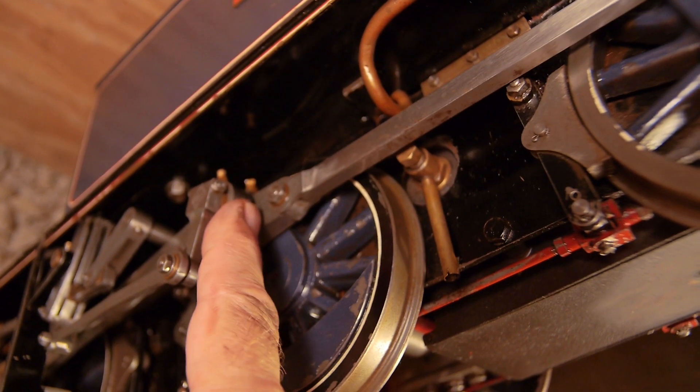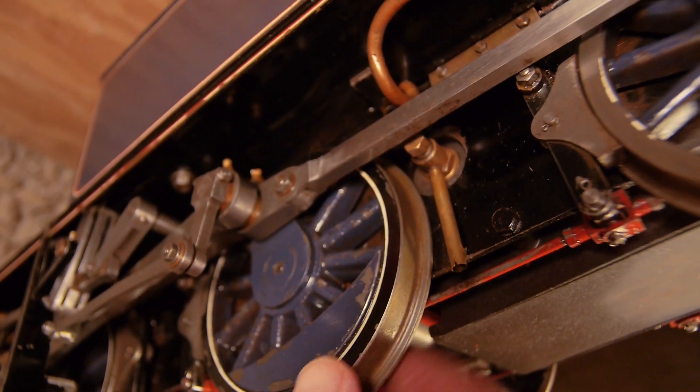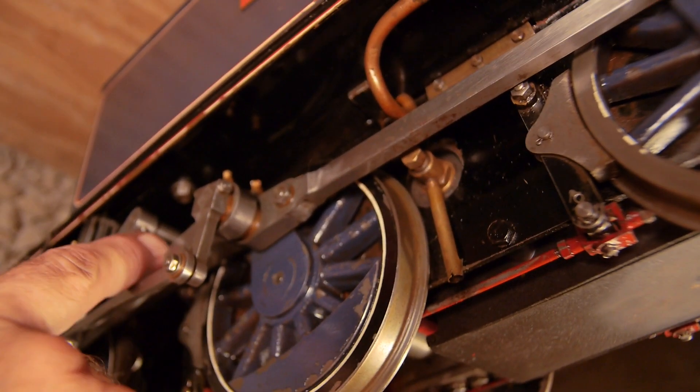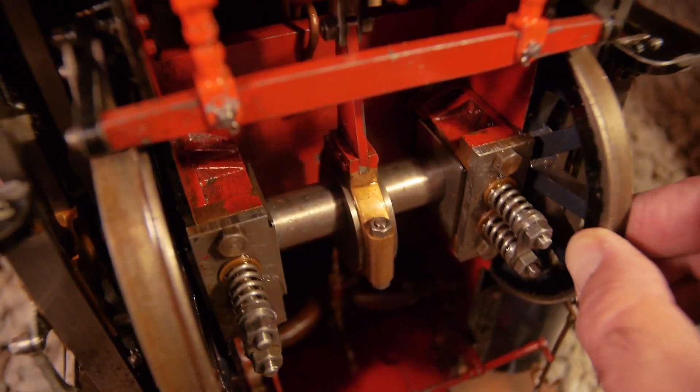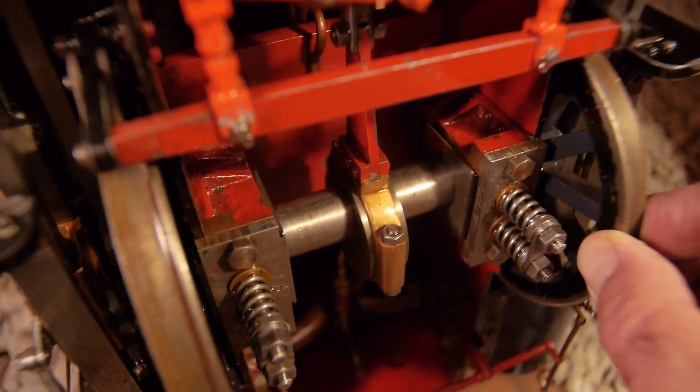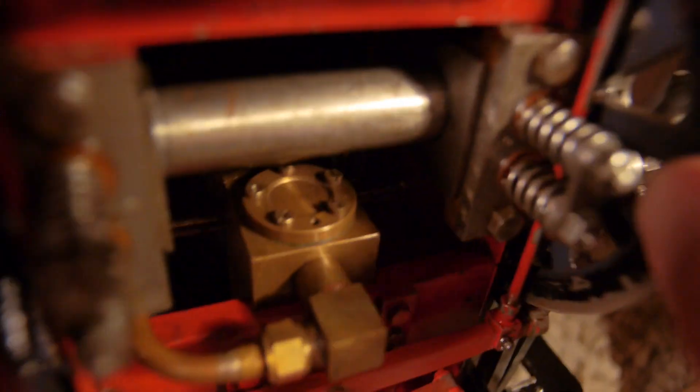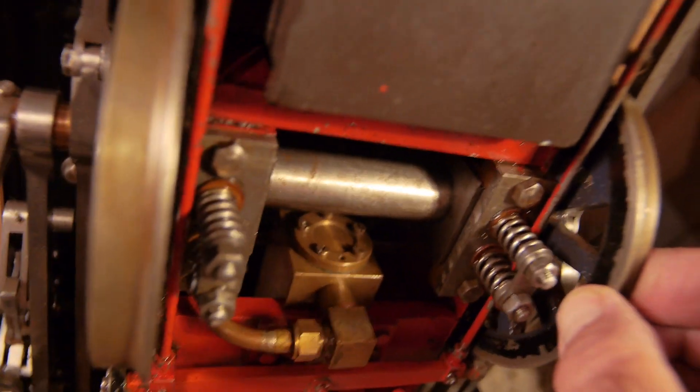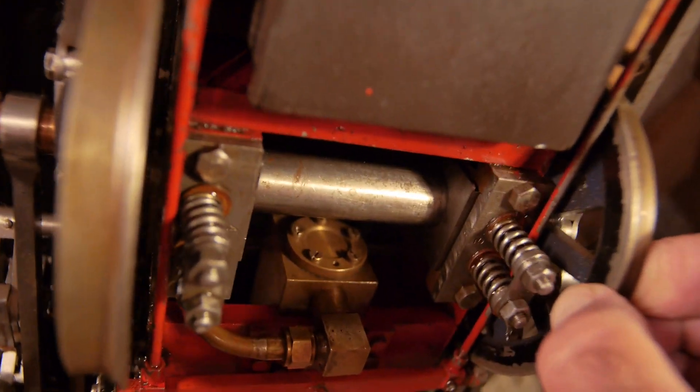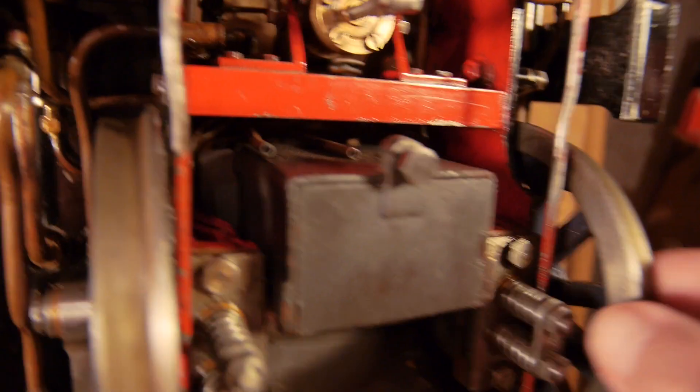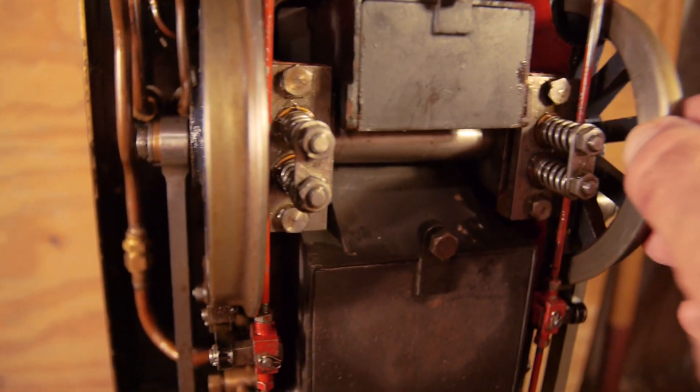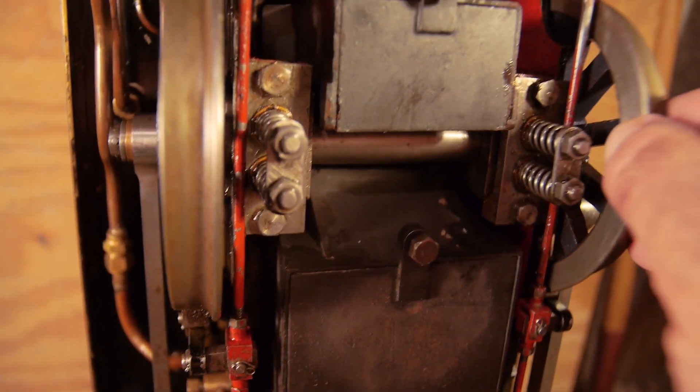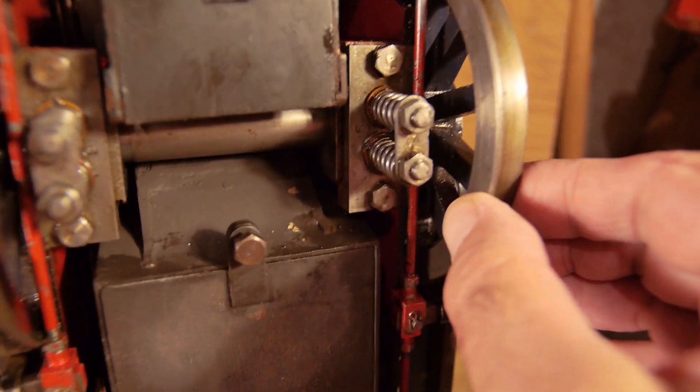You can see here all the valve gear, connecting rods, coupling rods, connecting rods. And you can see the amount of play there is in the wheels. The front one's not so much, these ones a little bit more, to allow it to go around corners. There's a lot of play in the back of this one, the rear one, to allow that to adjust as it goes around corners.